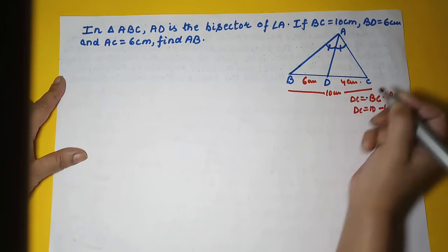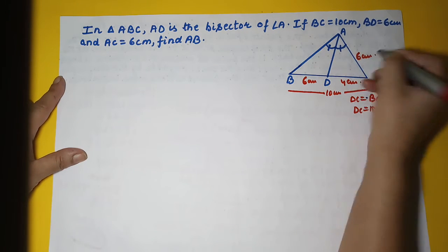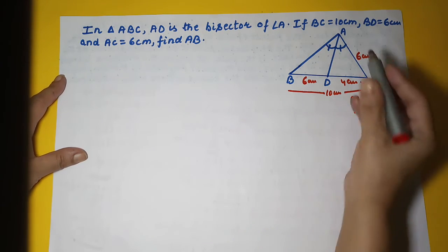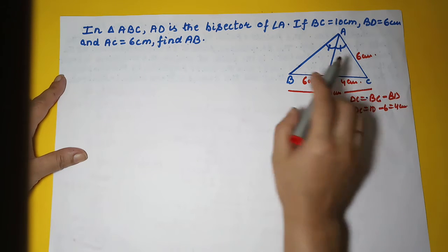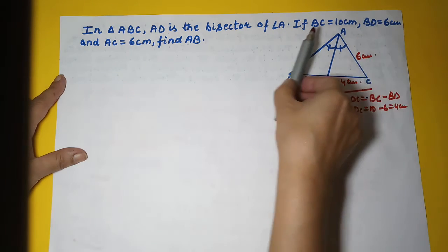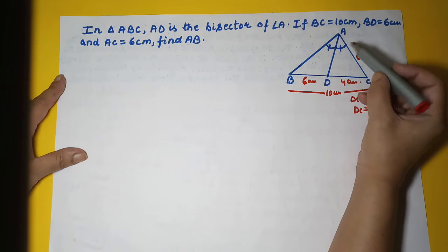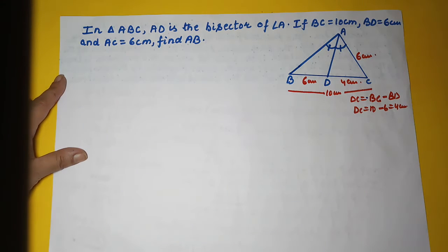And AC is given 6 centimeters. He wants me to calculate AB. Now we have done this theorem: if AD is the angle bisector, then the ratio of the arms of the angle in which A lies is equal to the ratio of the side on which it falls.